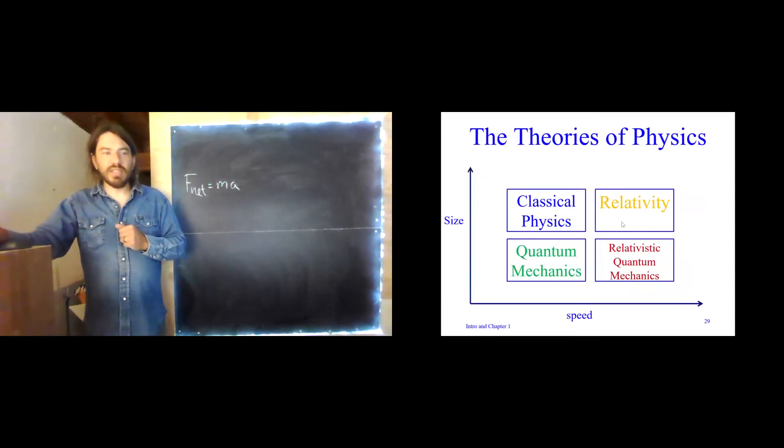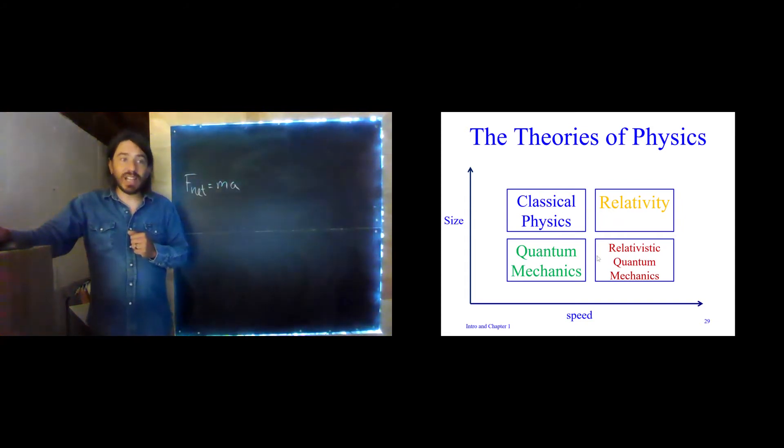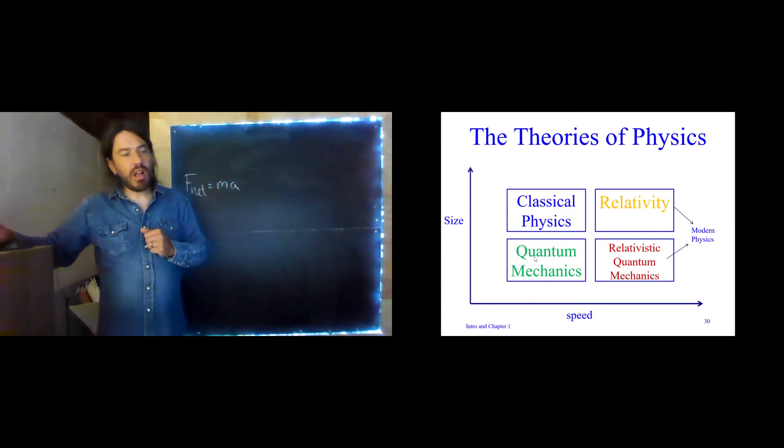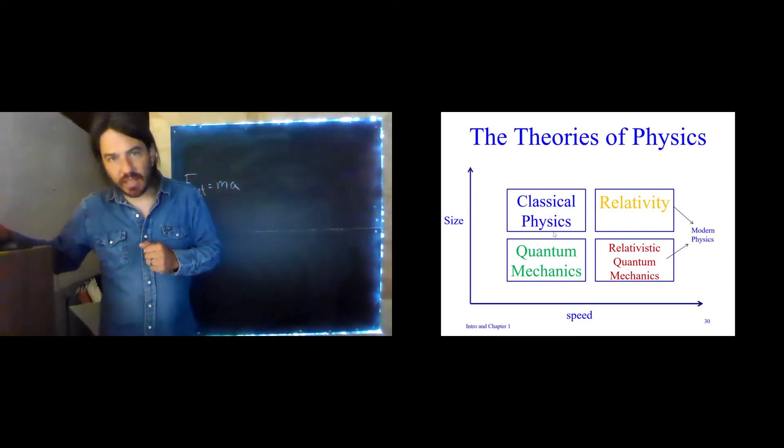Broadly speaking, we could group the theories of physics into four boxes: classical physics, quantum mechanics, relativity, and relativistic quantum mechanics. These are different realms that cover different aspects of this universe. Relativity and quantum mechanics and relativistic quantum mechanics, all three of these really, we classify as modern physics. All of this is physics of the 20th century and the 21st century. Classical physics is what we term physics prior to about 1900.